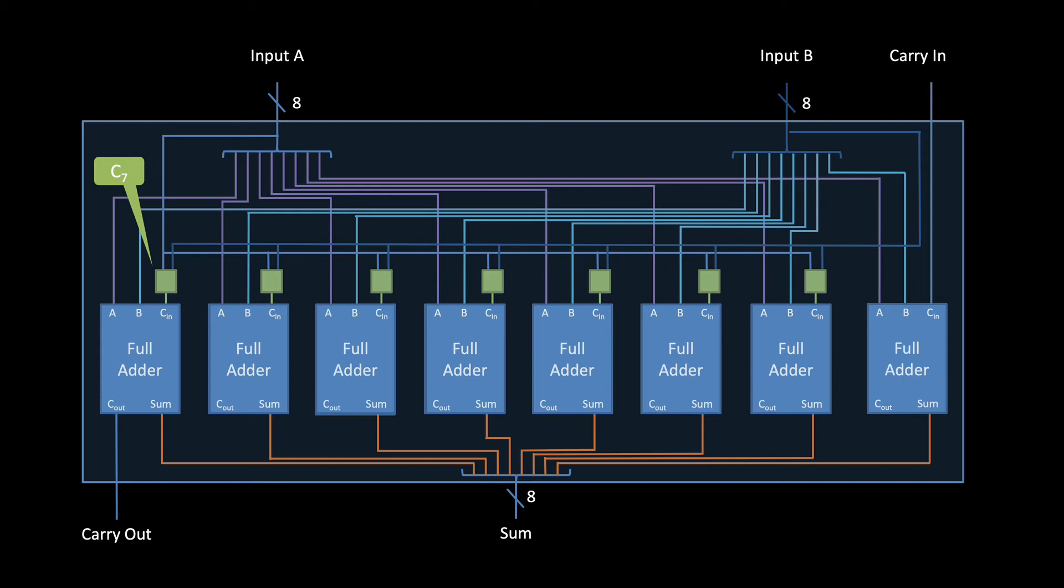Therefore, the overall propagation delay of this circuit depends primarily on the propagation delay of these green carry-in circuits. As we saw in the last video, the full adders below all have a constant propagation delay. So let's figure out the propagation delay for this carry-in circuit family.